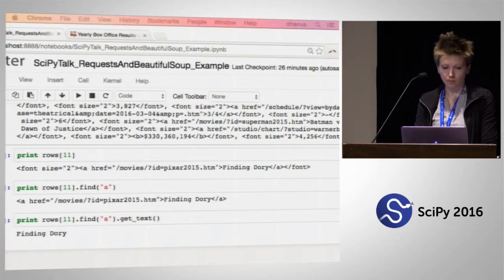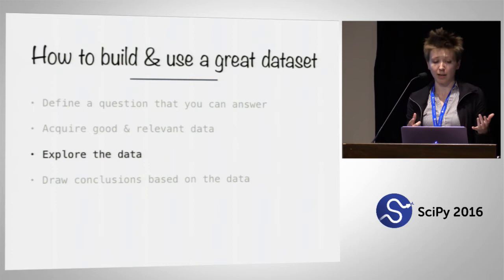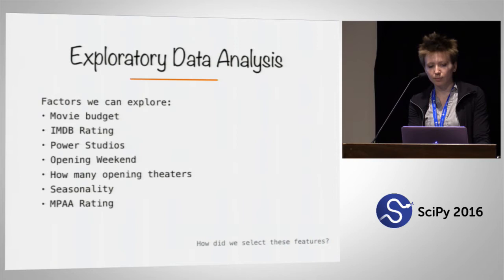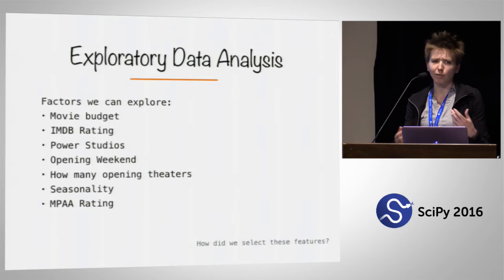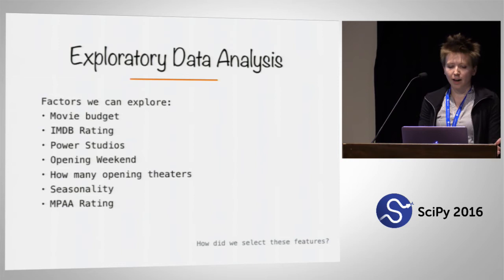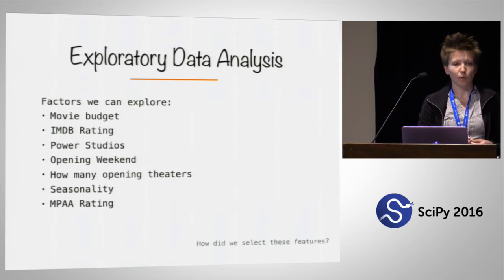We've now done two of our four steps: defined a question and acquired good, relevant data in our Jupyter notebook. Now we can explore the data. After our extensive scraping, the factors we managed to explore were: movie budget — you'd imagine that if you can buy everything you want and get the best actors, your movie will do better. Another is IMDb rating — you'd think movies people like might make more money. And whether particular studios, like Time Warner, affect success compared to lesser-known studios.